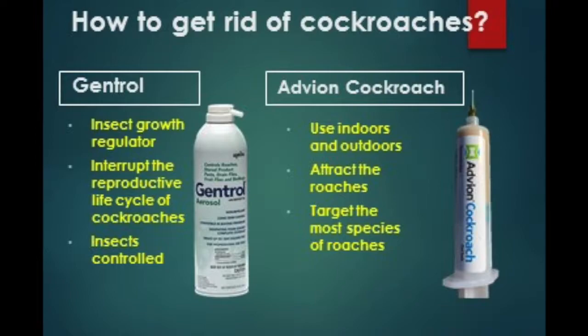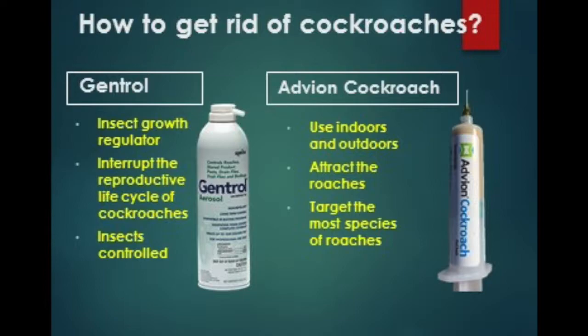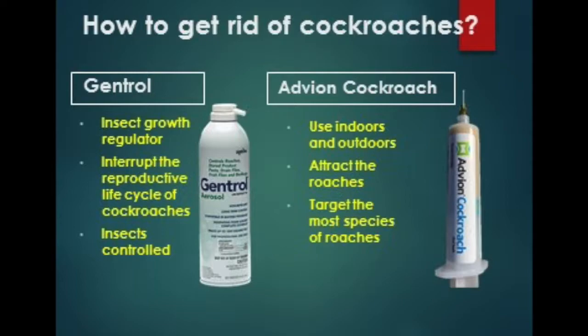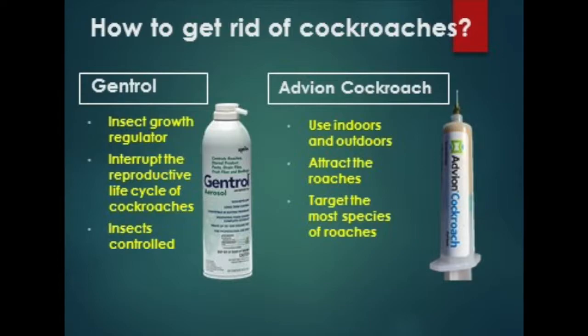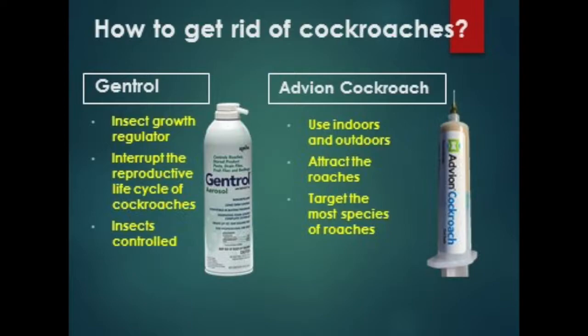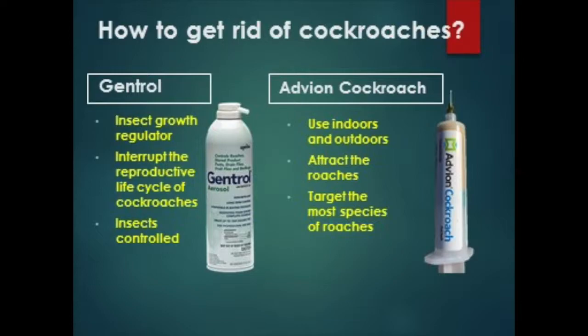How to get rid of cockroaches? You can use two products: Gentrol and Advion cockroach bait. Gentrol is an insect growth regulator that can interrupt the reproductive life cycle of cockroaches and can control many insects. For Advion cockroach, you can use it indoors and outdoors — it can attract roaches and targets the most species of roaches. An Orkin employee, Anthony Thomas, is going to show you how to use Gentrol and Advion.